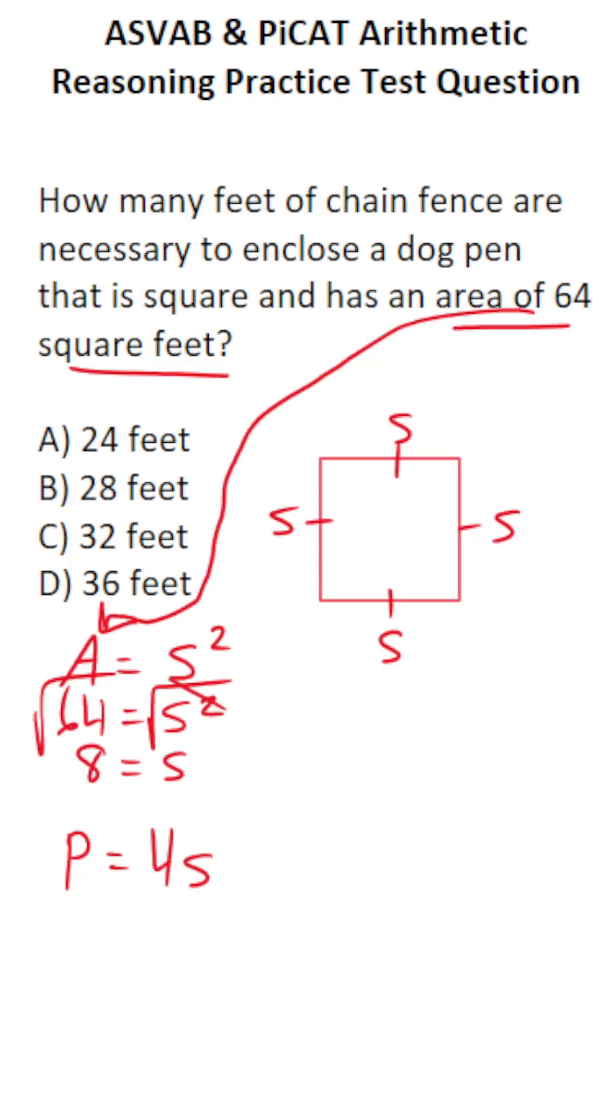Now that we know one of these side lengths is 8, we can plug that into our perimeter formula. P equals 4 times S. S is 8, so multiply 4 by 8. 4 times 8 is 32.